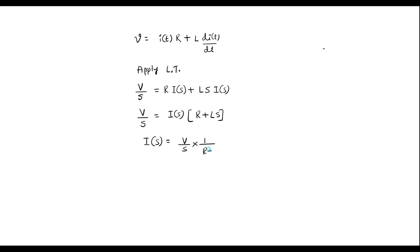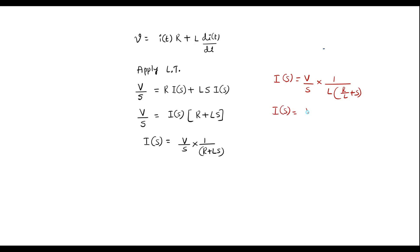Further I can simplify: I(s) is equal to V divided by s·(R + Ls). Further simplifying, I(s) is equal to V divided by s into L·(s + R/L).